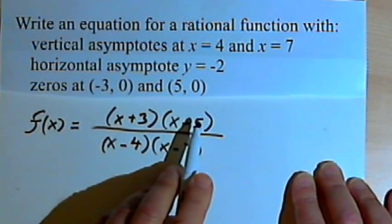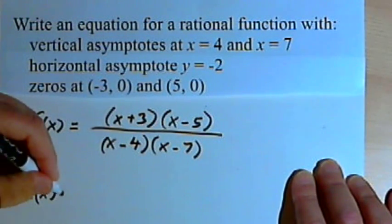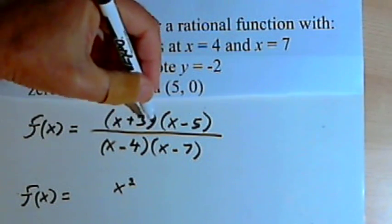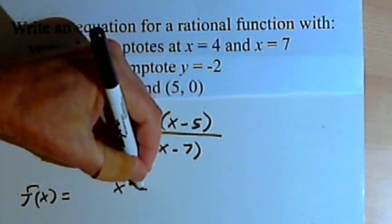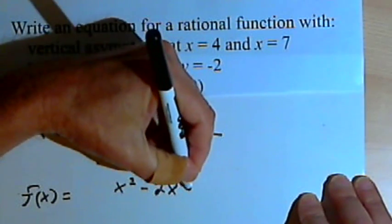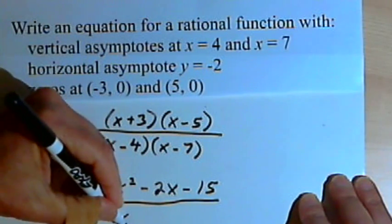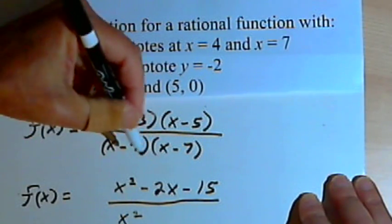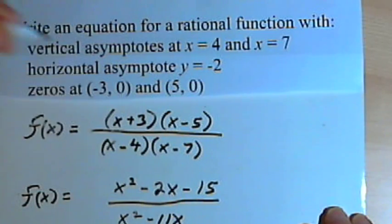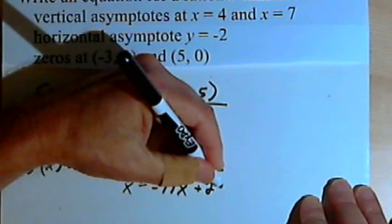Multiplying the binomials in the numerator gives f of x equals x squared, then 3x and negative 5x gives minus 2x, and 3 times negative 5 is negative 15. For the denominator, I'll have x squared, negative 4x and negative 7x gives minus 11x, and negative 4 times negative 7 is positive 28.